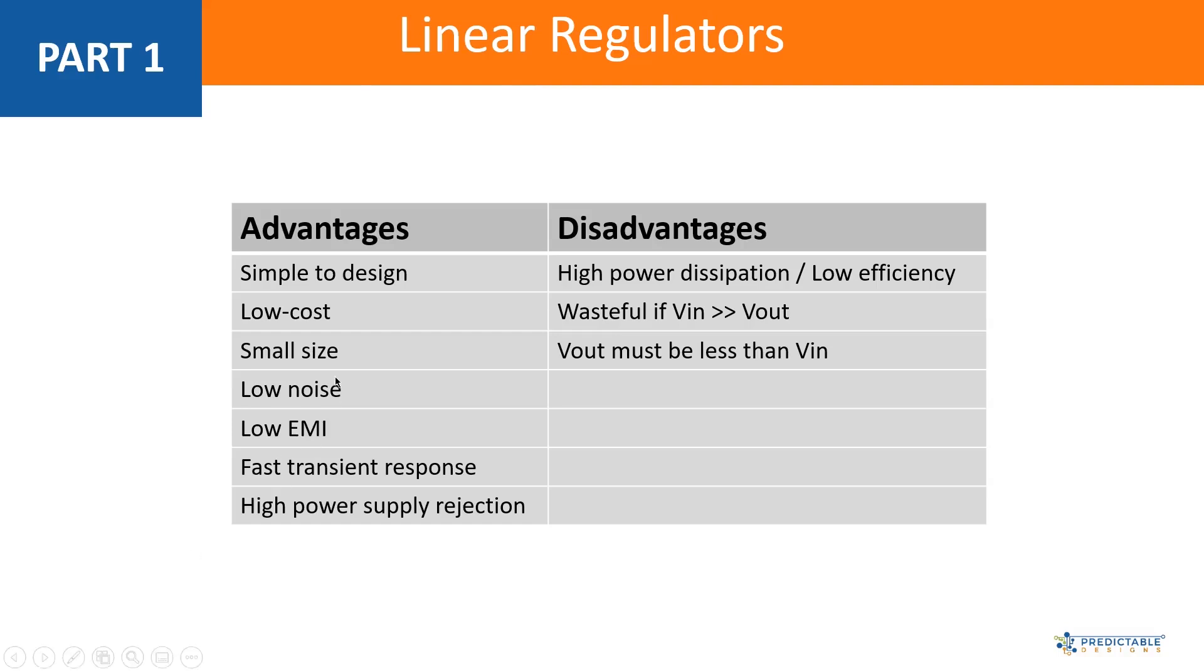Some of the other advantages are it's low noise, it has low EMI - electromagnetic interference potential - just because there's nothing switching. With a switching regulator, hence the name, there's switching, there's high frequency switching, and that switching can feed into other parts of your board and your circuits and cause problems. So that's an advantage of a linear regulator - it doesn't have that.